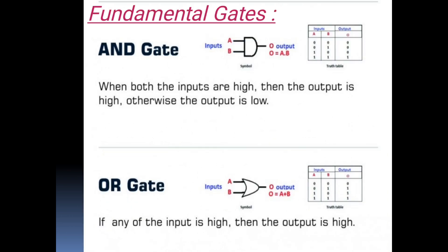Let's start with the fundamental gates. The first fundamental gate is AND gate. This gate has two or more input signals but only one output signal. It produces output 1 when all inputs are 1. This gate is like mathematical multiplication. The second fundamental gate is OR gate. OR gate has two or more input signals but only one output signal. It produces output 1 when any of the input is 1. This gate is like mathematical addition. In AND gate we use the AND operation and in OR gate we use the OR operation.